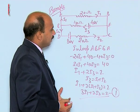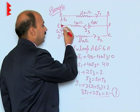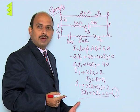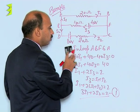Now we can take the another loop, that is E F C D E, that is also clockwise. In this case when we take the loop, we can solve it again.